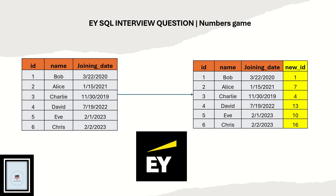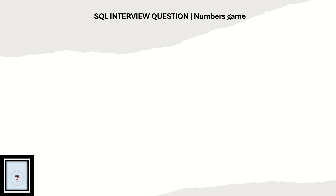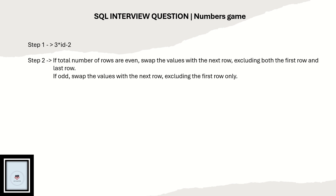Let's understand the logic. Step one is to create a new column with the formula: 3 * id - 2. Step two involves a swapping condition: if the total number of rows in the table is even, you need to swap values with the next row, excluding both the first row and the last row.